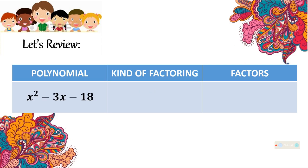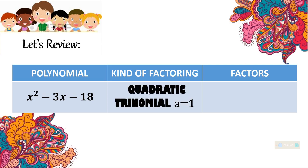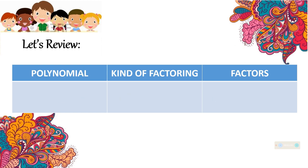Next, let us have x squared minus 3x minus 18. The kind of factoring technique we are going to use is quadratic trinomial where a is equal to 1. And the factors of the given trinomial are x minus 6 times x plus 3, or you may also write x plus 3 times x minus 6.